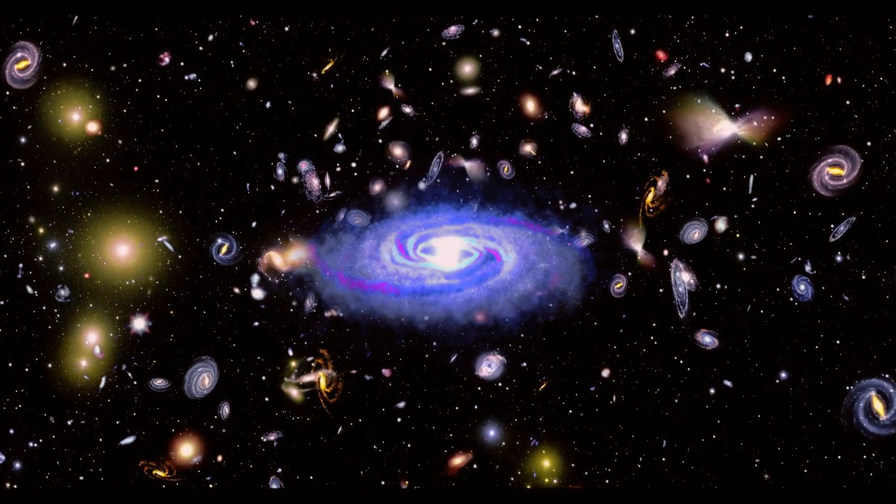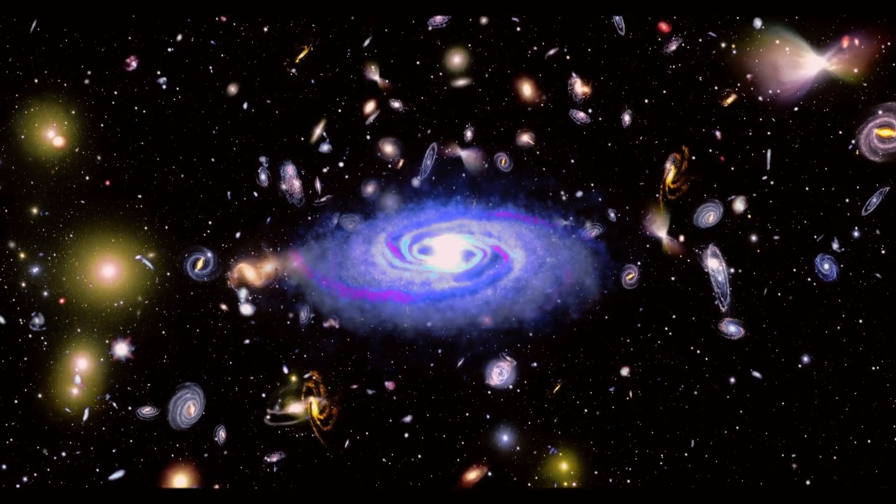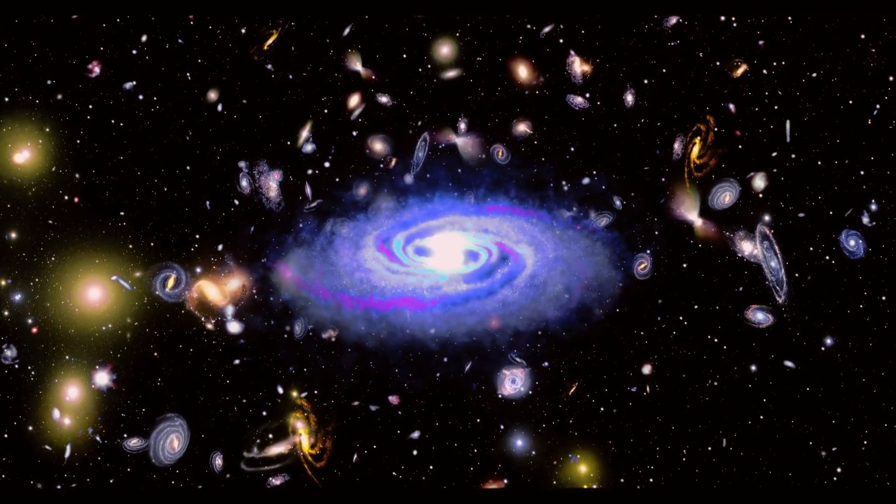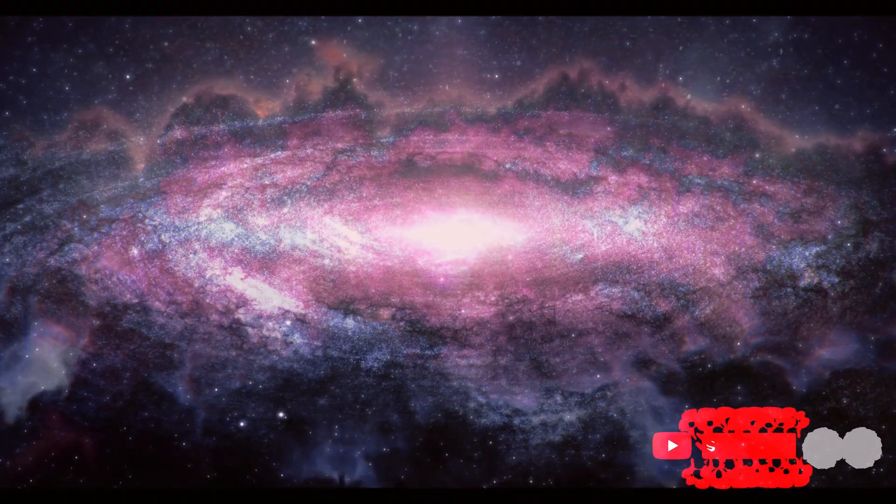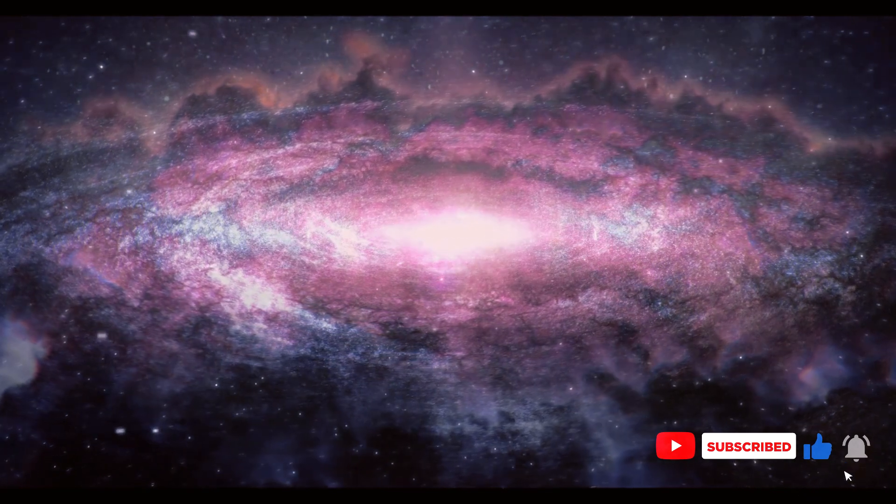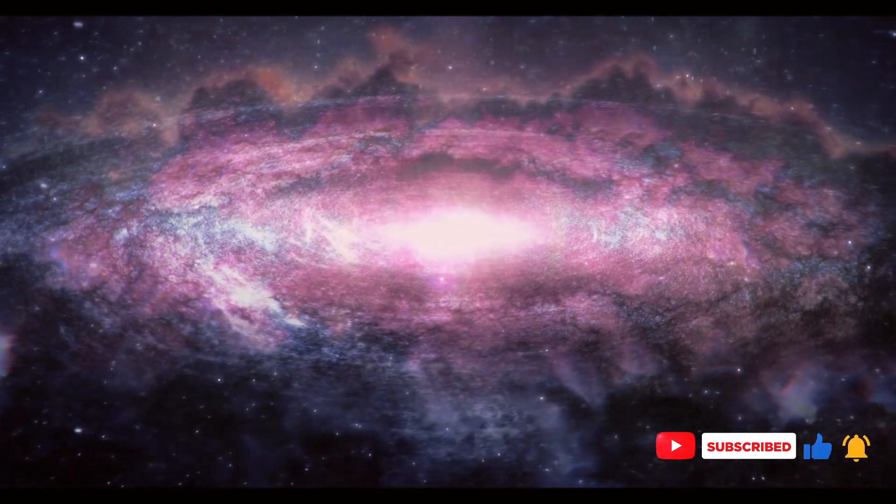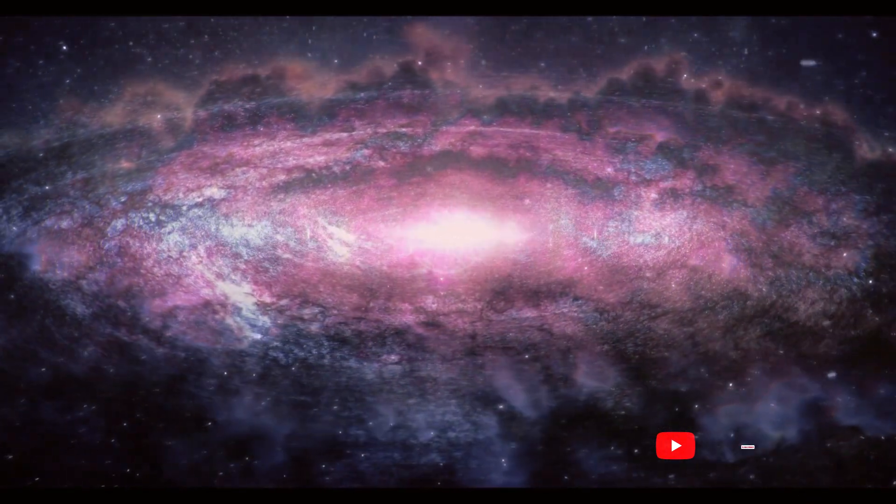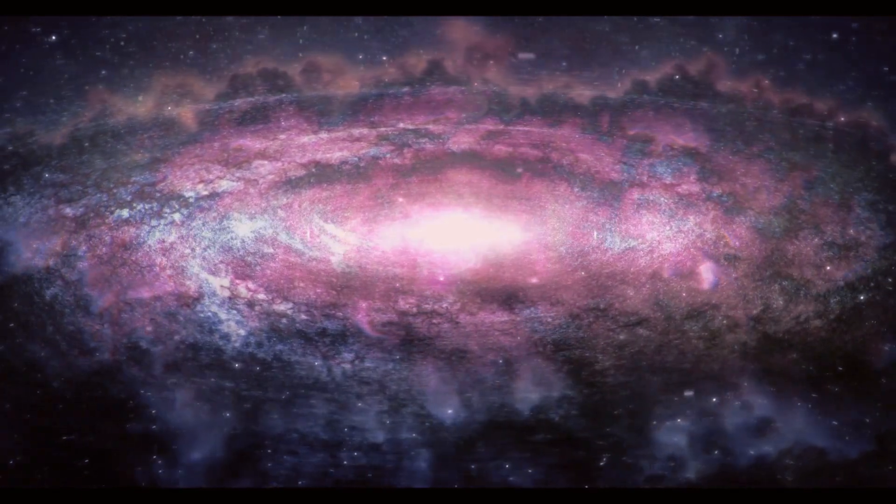Spiral galaxies, like our Milky Way, are characterized by their rotating disk shape. They have a prominent central bulge surrounded by spiral arms that extend outward. These arms are made up of young, hot stars, and are often rich in interstellar matter.